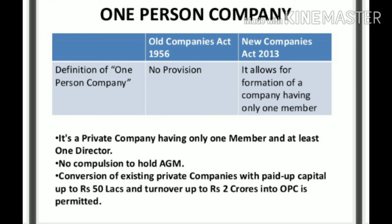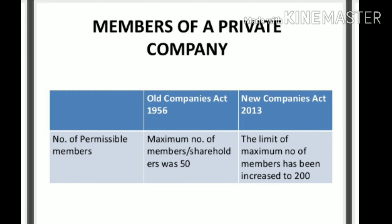When a One Person Company is converted into a private company, it must follow certain regulations and limitations according to the new Companies Act 2013. This represents a significant difference between the Companies Act 1956 and 2013.